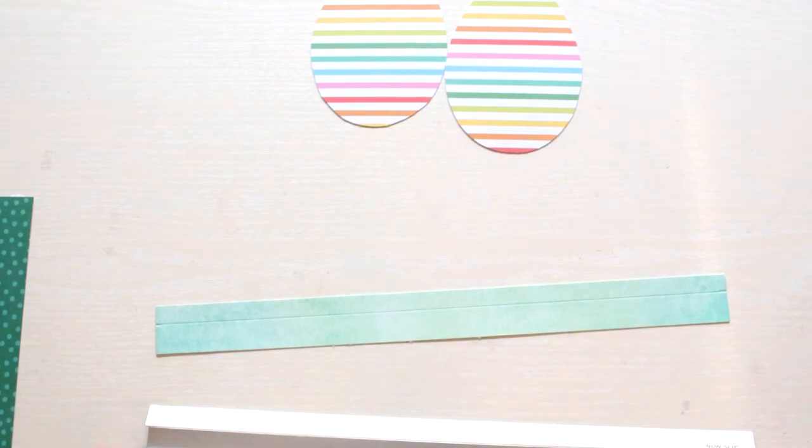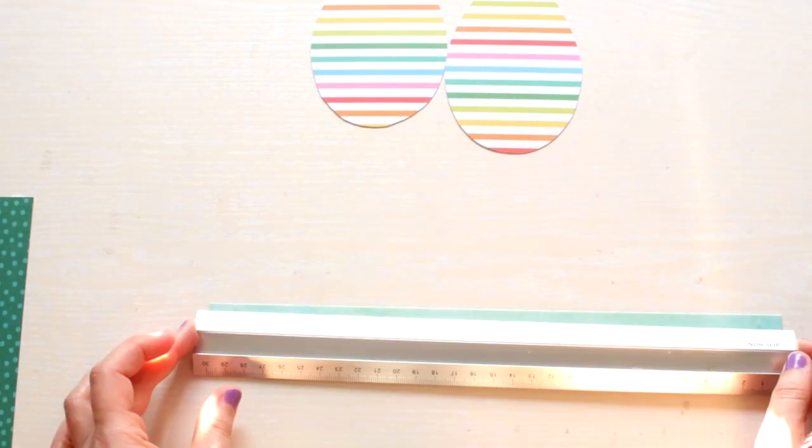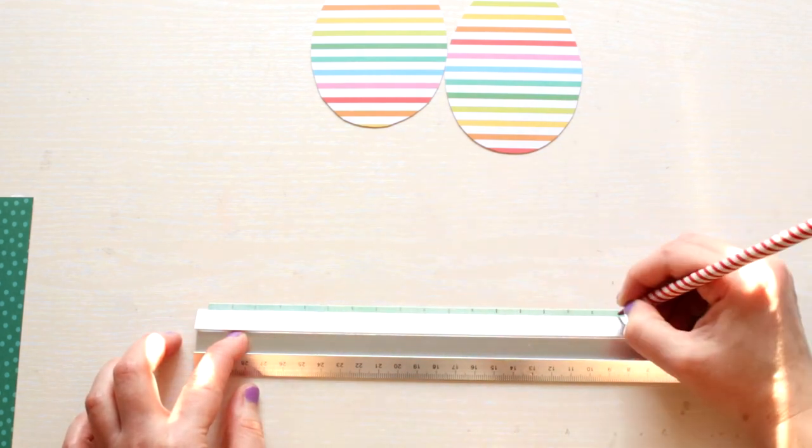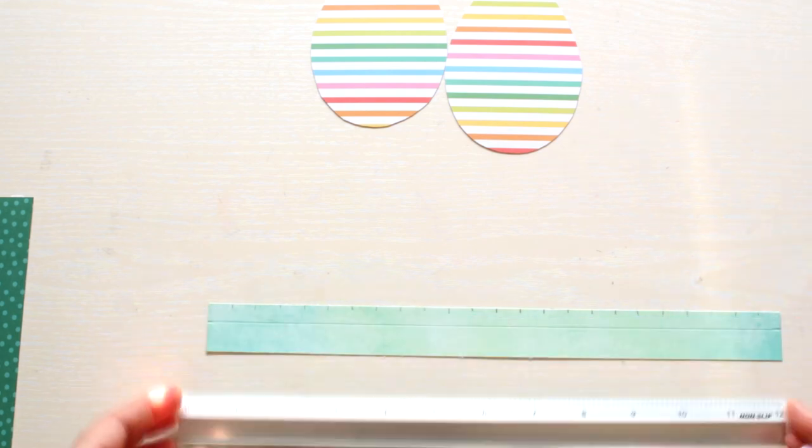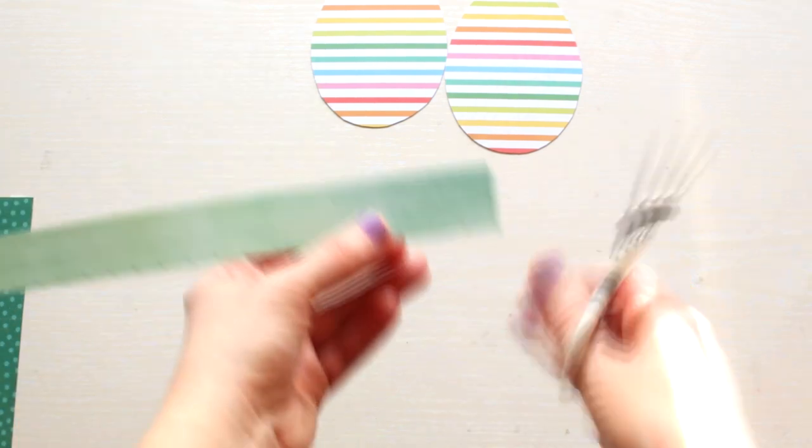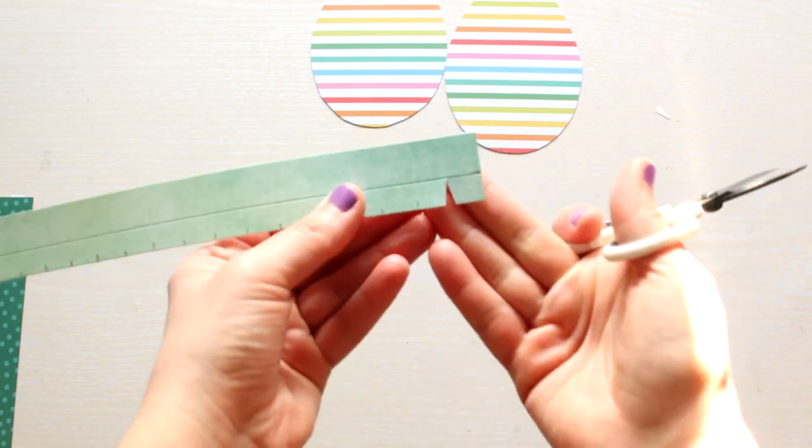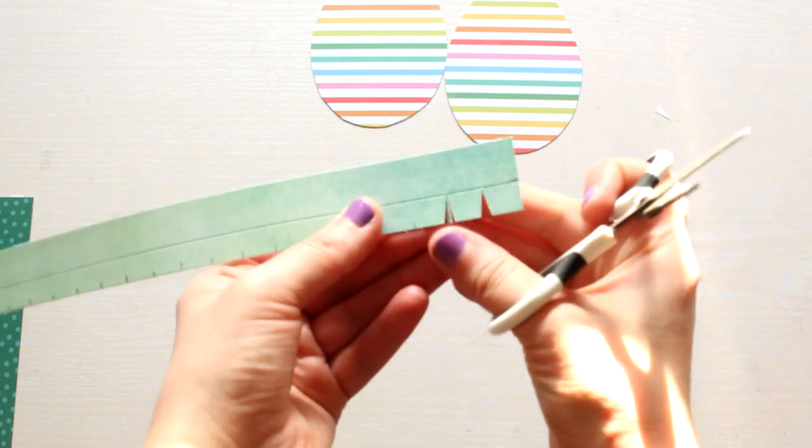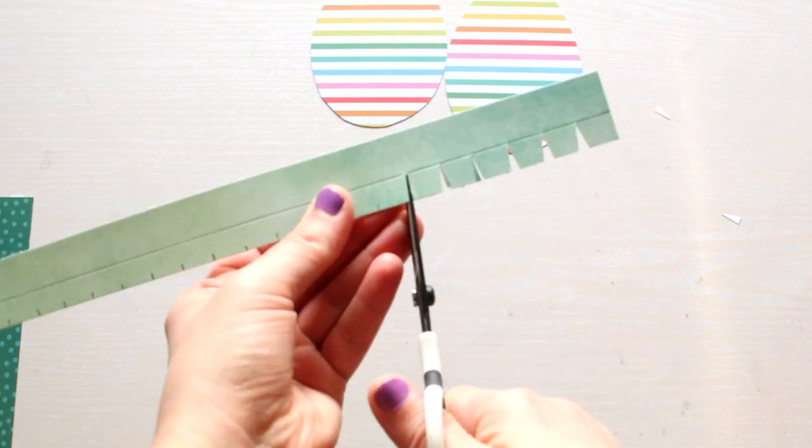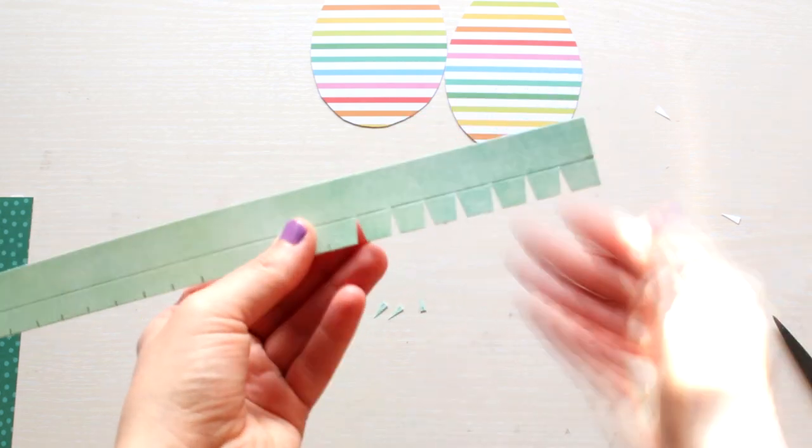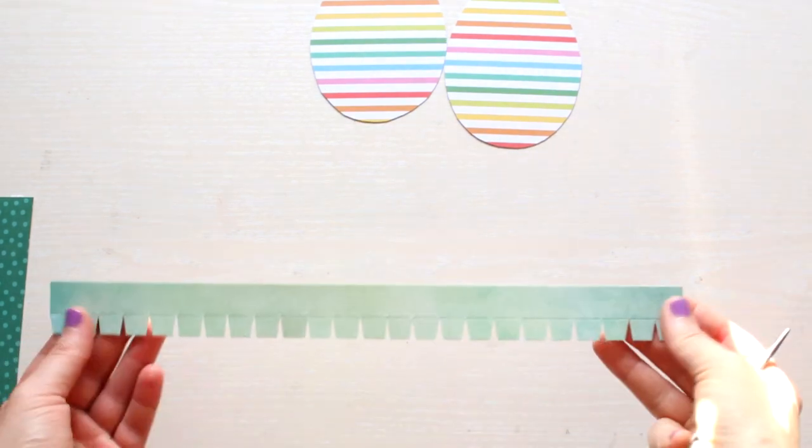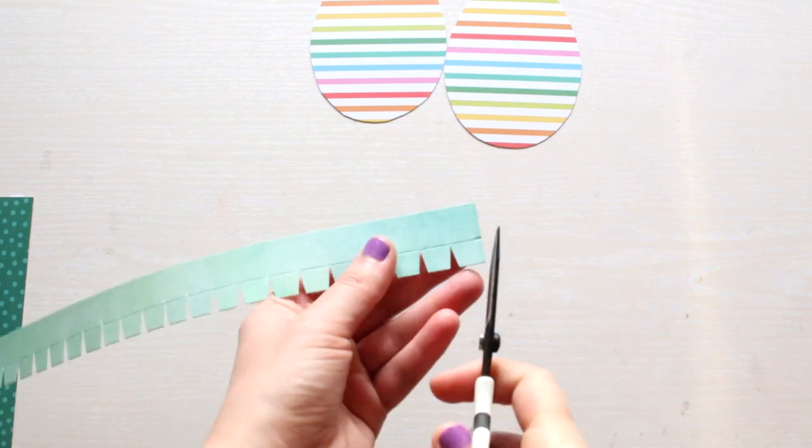Next take your ruler and mark on the top side at every half an inch. Then take your scissors and cut notches at every half an inch where you made the marks. Don't forget to trim the first and the last flap as well.